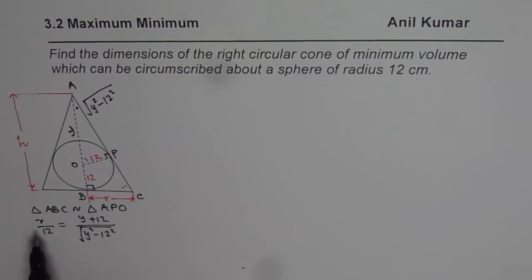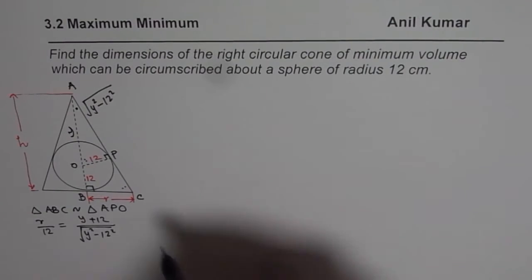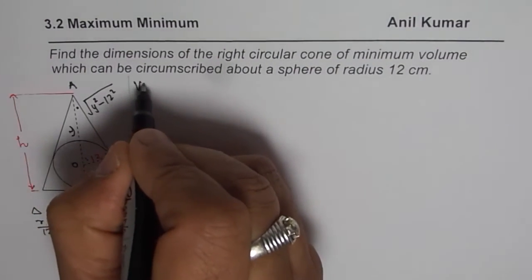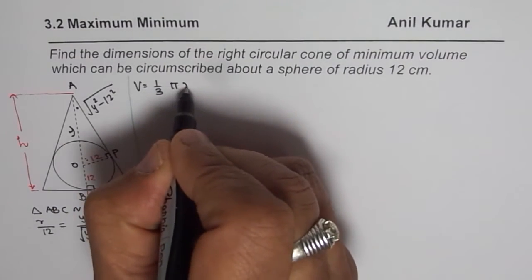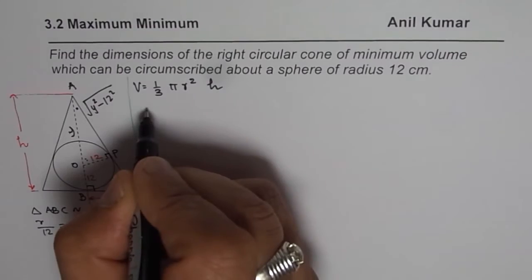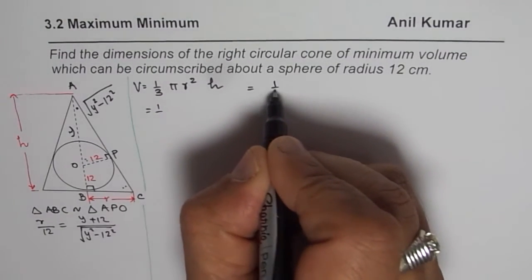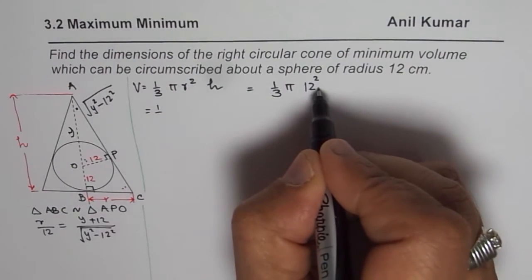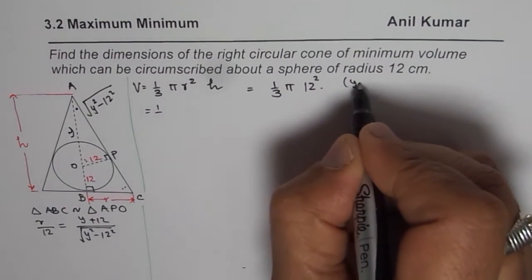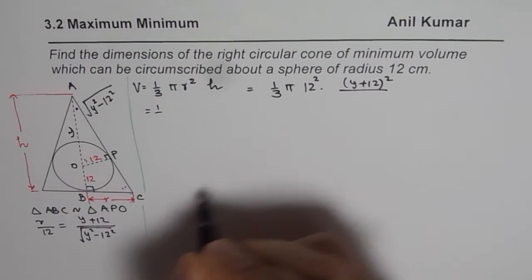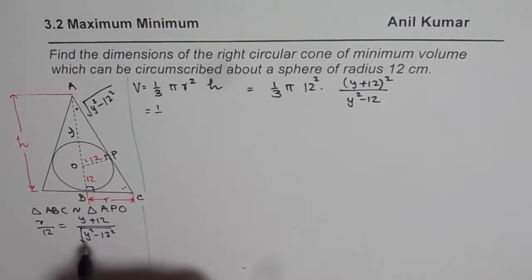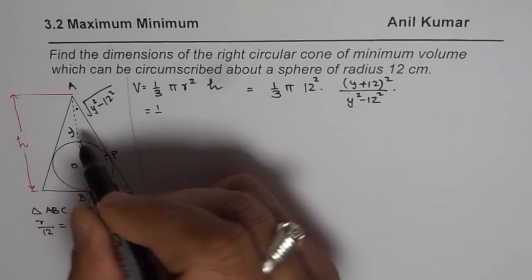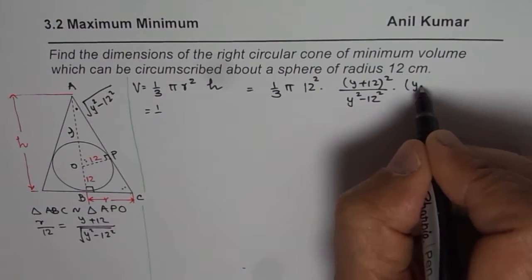From the similarity ratio, R equals 12 times (Y plus 12) divided by the square root of Y squared minus 144. Now we find a relation for volume. Volume of the cone equals one-third pi R squared times height. Substituting R, we get V equals one-third pi times 12 squared times (Y plus 12) squared divided by (Y squared minus 144), multiplied by height which is Y plus 12.